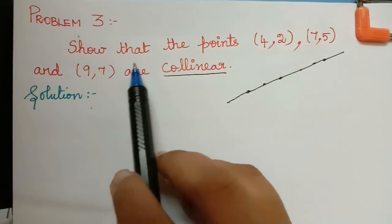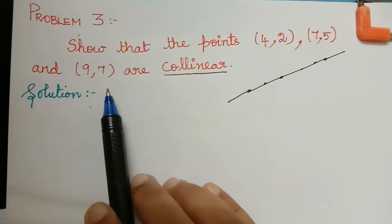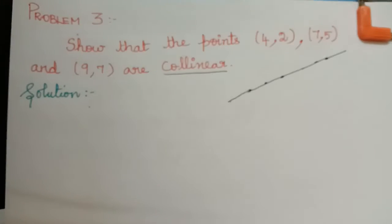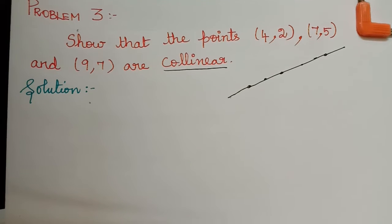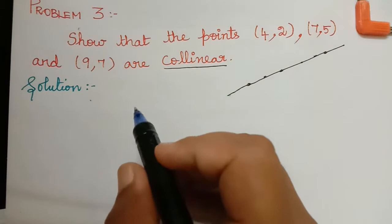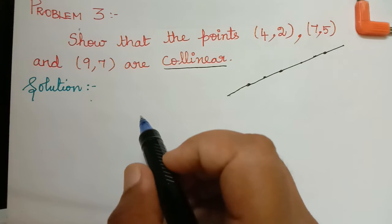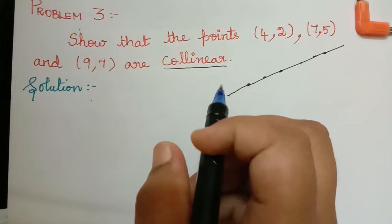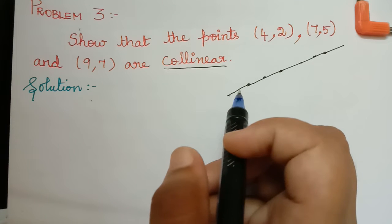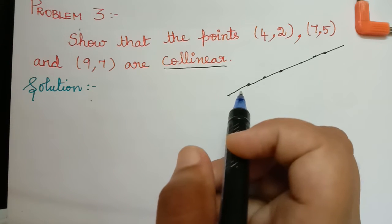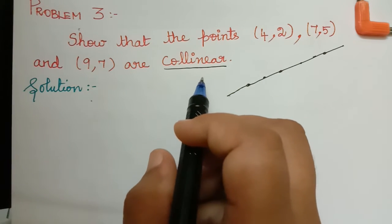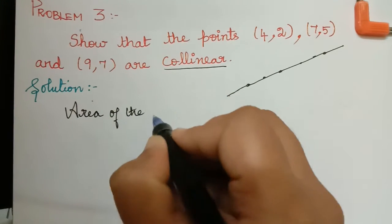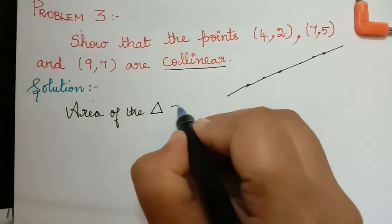Now, in this question they are asking us to show that these three points are collinear — that is, to show that these three points lie on the same straight line. In order to show that the given three points are collinear, it is enough if we show that the area of the triangle formed by these three points is equal to zero, because if all three lie on the same straight line, they definitely cannot form a triangle. So we have to prove that the area of the triangle formed by these three points is equal to zero.